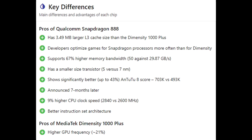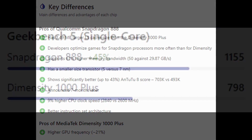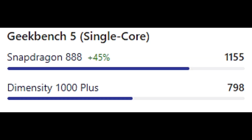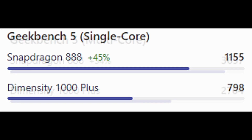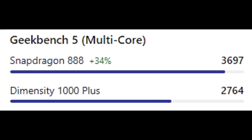In the Geekbench 5 single-core score, the Snapdragon 888 scores 1155 points and the Dimensity 1000 Plus scores 798 points, making the Snapdragon 888 45% faster. In the Geekbench 5 multi-core test, the Snapdragon 888 scores 3679 points and the Dimensity 1000 Plus scores 2764 points, so the Snapdragon 888 scores 34% better than the MediaTek Dimensity 1000 Plus.